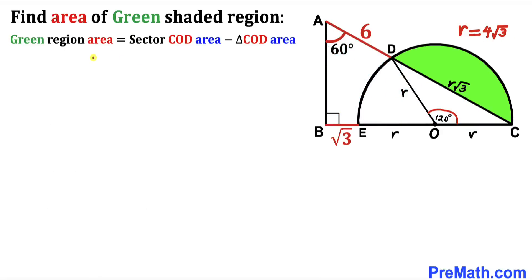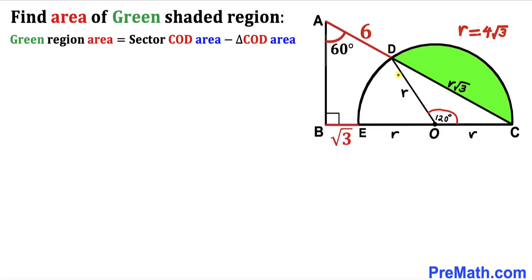Now let's observe that the green shaded region area is going to be equal to the sector COD area minus the area of triangle COD, as you can see in this equation. Our task is now to calculate the area of sector COD and the area of triangle COD.